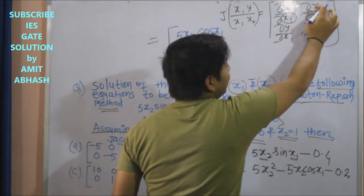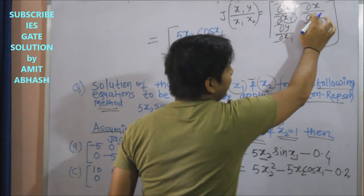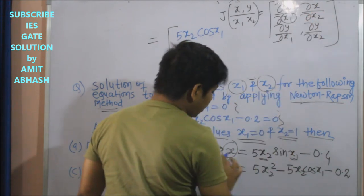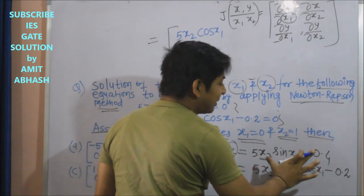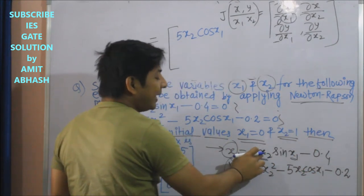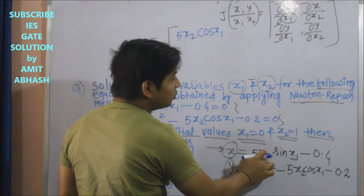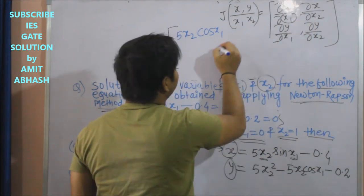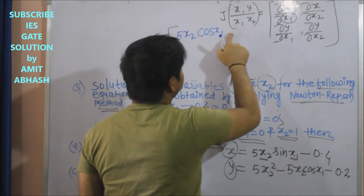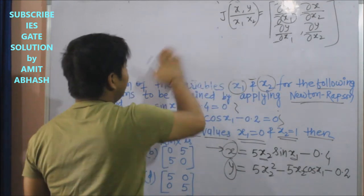Now del x upon del x2: the partial differentiation with respect to x2. So x2 differentiation, one ho gaya, and the rest are constant. So this is 5x2 cos x1.